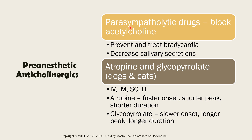One indication of anticholinergic drugs is that they prevent and decrease bradycardia. If you have an animal with serious bradycardia and you administer an anticholinergic drug, it will block the parasympathetic nervous system and the heart rate will go up. Another indication is that it will decrease salivary secretions, since the parasympathetic nervous system drives secretions during digestion in the GIT and salivary glands. We can decrease those secretions by administering anticholinergic drugs.